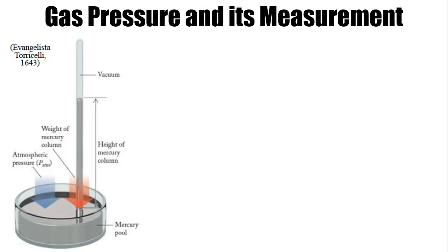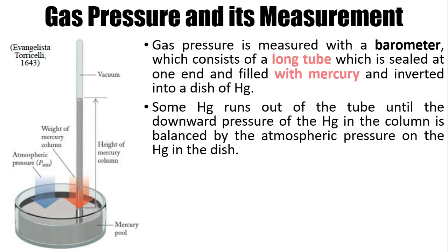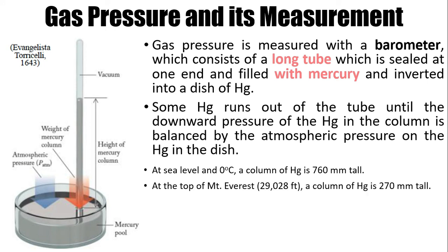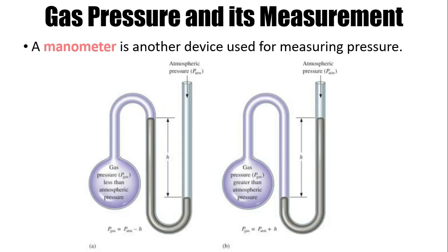How do we measure gas pressure? Gas pressure is measured with a barometer, which consists of a long tube, which is sealed at one end and filled with mercury. If you remember Evangelista Torricelli, that's right. Evangelista Torricelli is actually the one who pioneered the barometer. Some mercury runs out of the tube until the downward pressure of the mercury in the column is balanced by the atmospheric pressure on the mercury in the dish. At sea level and 0 degrees Celsius, a column of mercury is 760 mm tall. And at the top of Mount Everest, a column of mercury is 270 mm tall. Another way in measuring pressure is by using manometer.